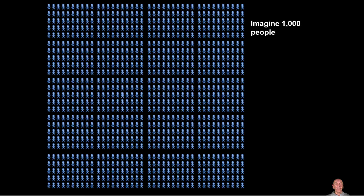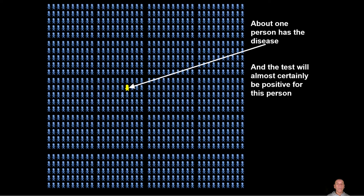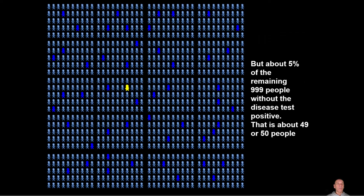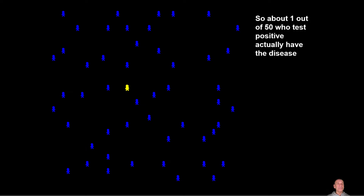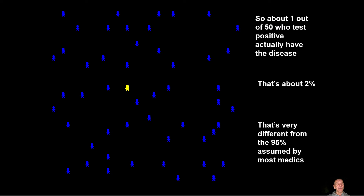To see why, imagine a thousand people. About one person is going to have the disease, and the test will almost certainly test positive for this person. But that leaves 999 who don't have the disease, and about 5% of those — roughly 49 to 50 people — are going to test positive. So if we only look at those testing positive, only one out of about 50 who test positive actually has the disease. That's about 2%, which is very different from the 95% assumed by most medics.